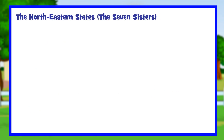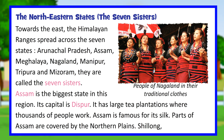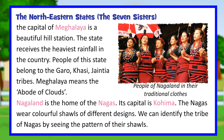Towards the east, the Himalayan ranges spread across seven states — Arunachal Pradesh, Assam, Meghalaya, Nagaland, Manipur, Tripura, and Mizoram — collectively called the Seven Sisters. Assam is the biggest state in this region, with its capital at Dispur. It has large tea plantations and is famous for its silk. Shillong, the capital of Meghalaya, is a beautiful hill station that receives the heaviest rainfall in the country. The people belong to the Garo, Khasi, and Jaintia tribes. Meghalaya means the abode of clouds.